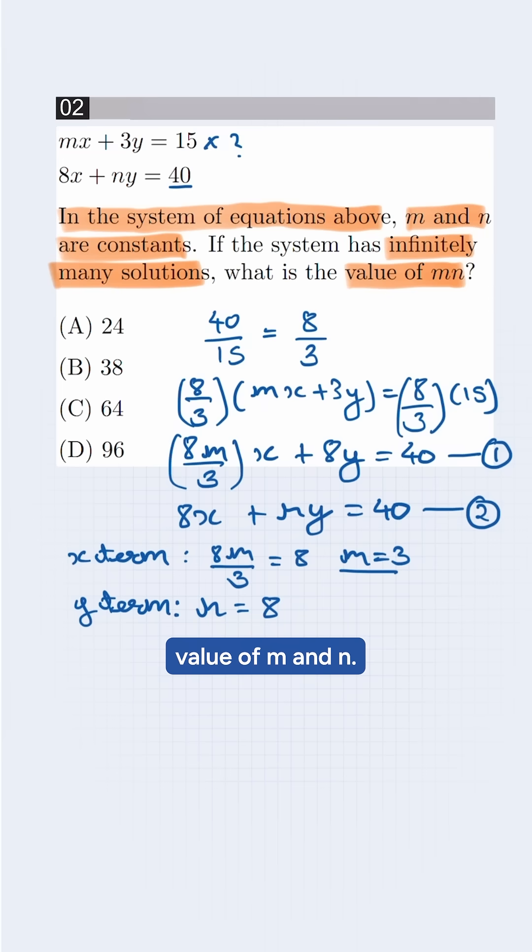We found the value of m and n. So our answer will be B, right? But no, we need to find the value of m into n. So m into n, it will be 24.